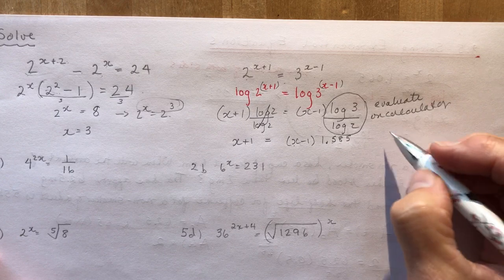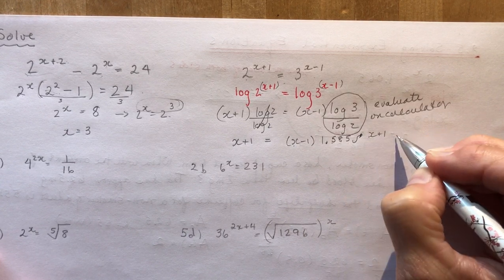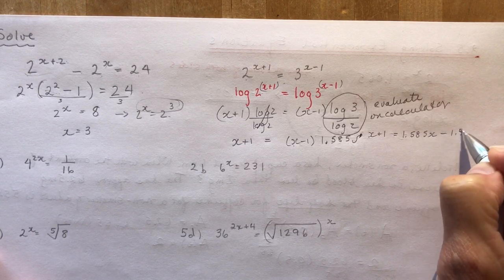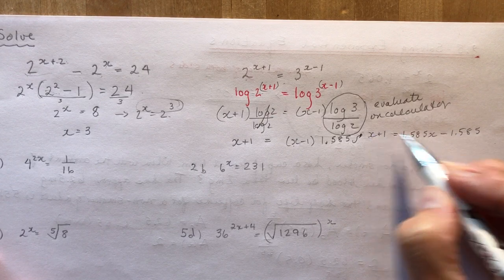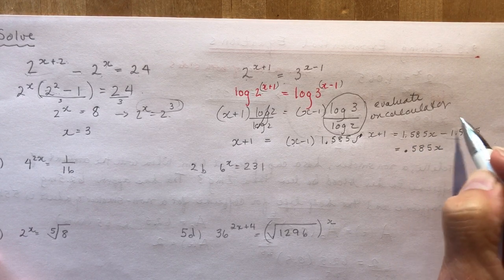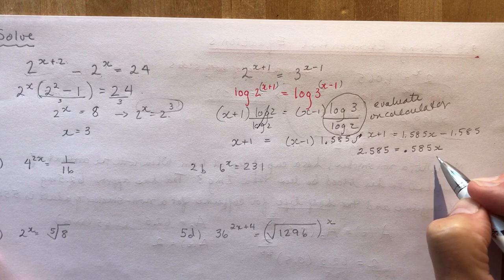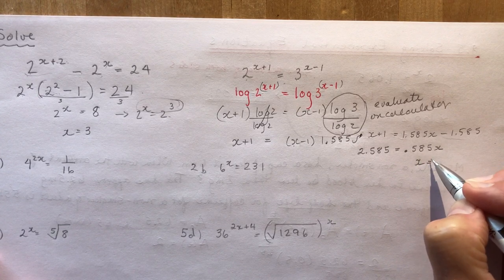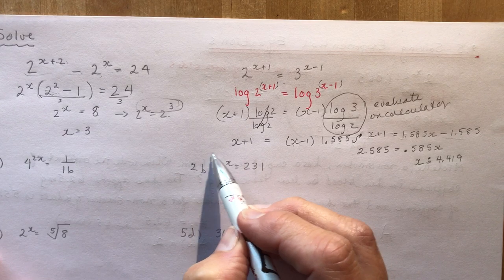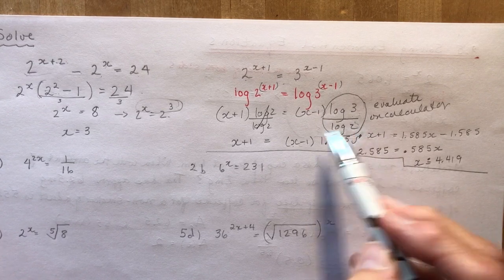So x plus 1 equals 1.585x minus 1.585. Bring the x terms together: 1 minus 1.585x gives −0.585x on the right, and bring 1.585 over to get 2.585 on the left. Dividing: x is approximately equal to 4.419.